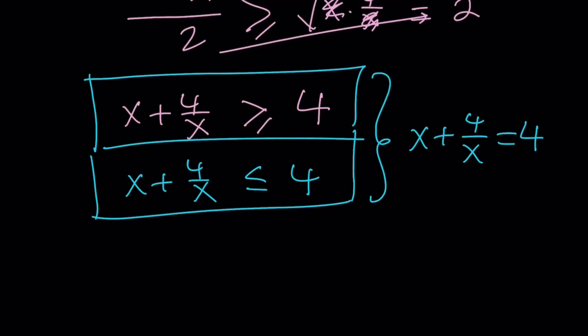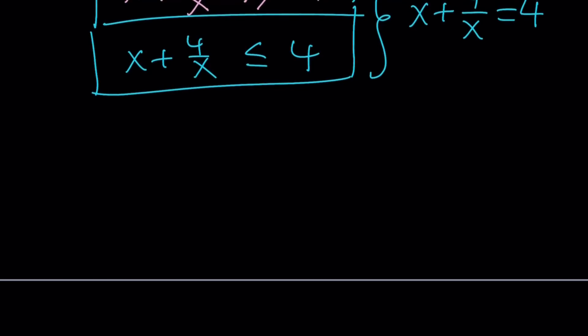By AM-GM, if x is positive, we got two results that seem to conflict. One says this quantity must be greater than or equal to 4, the other says less than or equal to 4. But when you put it together with the word 'and', this implies that x plus 4 over x must equal 4.